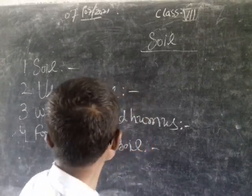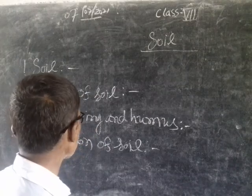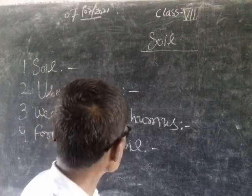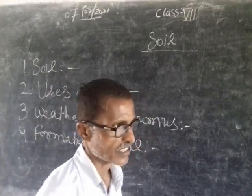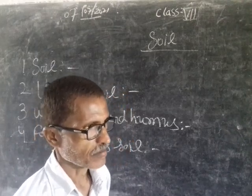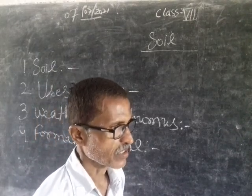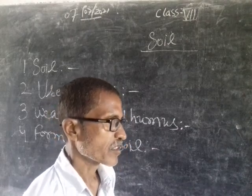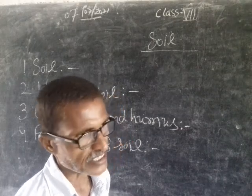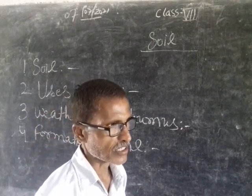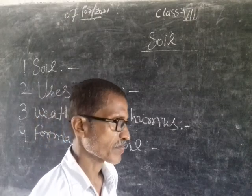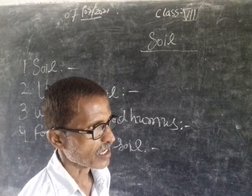Now I will tell you the uses of Soil. There are many uses of Soil. Soil is essential for agriculture — we grow grains, pulses, and vegetables on the Soil. Soil is also essential for making bricks and mortar, which are building materials essential to build houses.